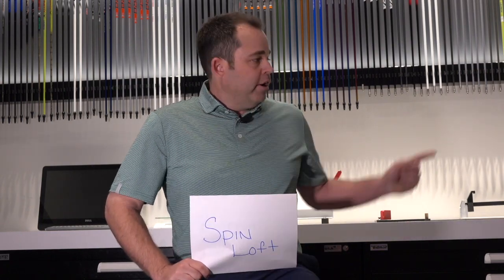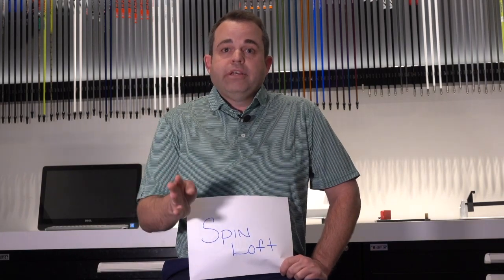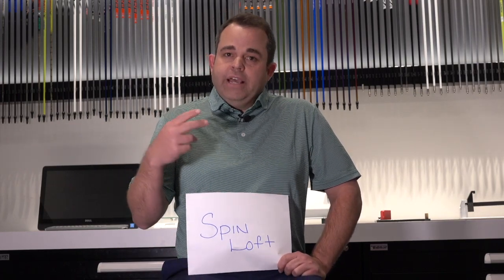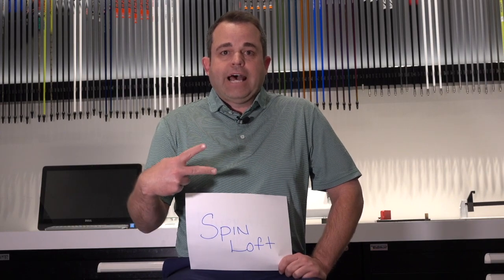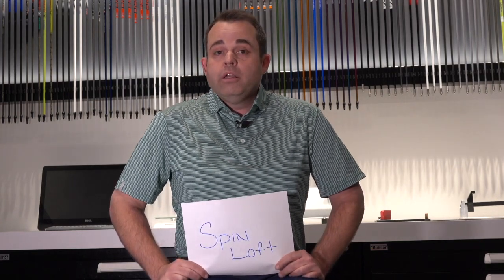Spin loft — this is a beauty. We have static loft of the golf club. When you go over and put it in the loft and lie machine, that's static loft. Dynamic loft is what the loft is presented when you hit the golf ball at max compression. You take that number, plus or minus the angle of attack — that degree is your spin loft. If you want the ball to spin more, it needs to be somewhere around 44 degrees. If you want it to spin less, have less spin loft. Pretty simple.